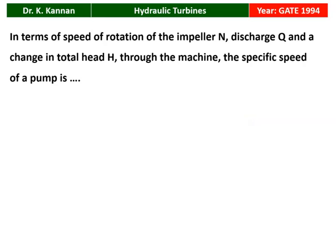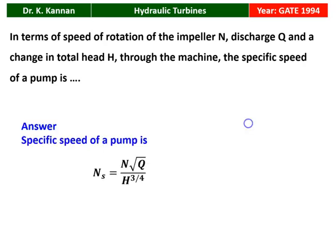The first question is from the 1994 question paper. In terms of speed of rotation of the impeller N, discharge Q, and change in the total head H through the machine, the specific speed of a pump is? We have to define specific speed and give the equation. The specific speed of the pump is: N_s = N × √Q / H^(3/4). This is the equation for specific speed of the pump.